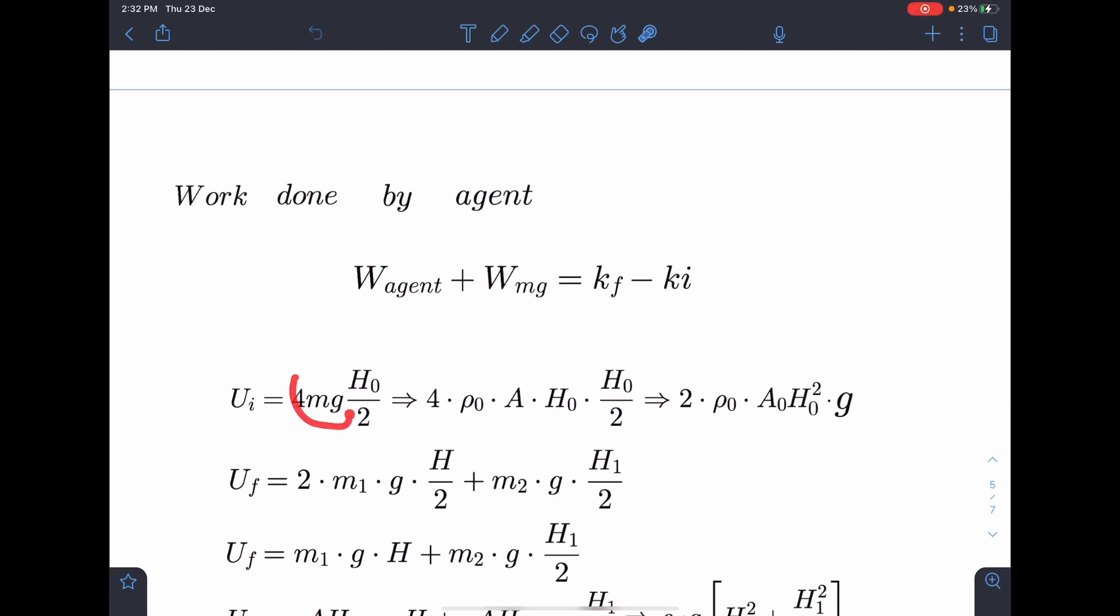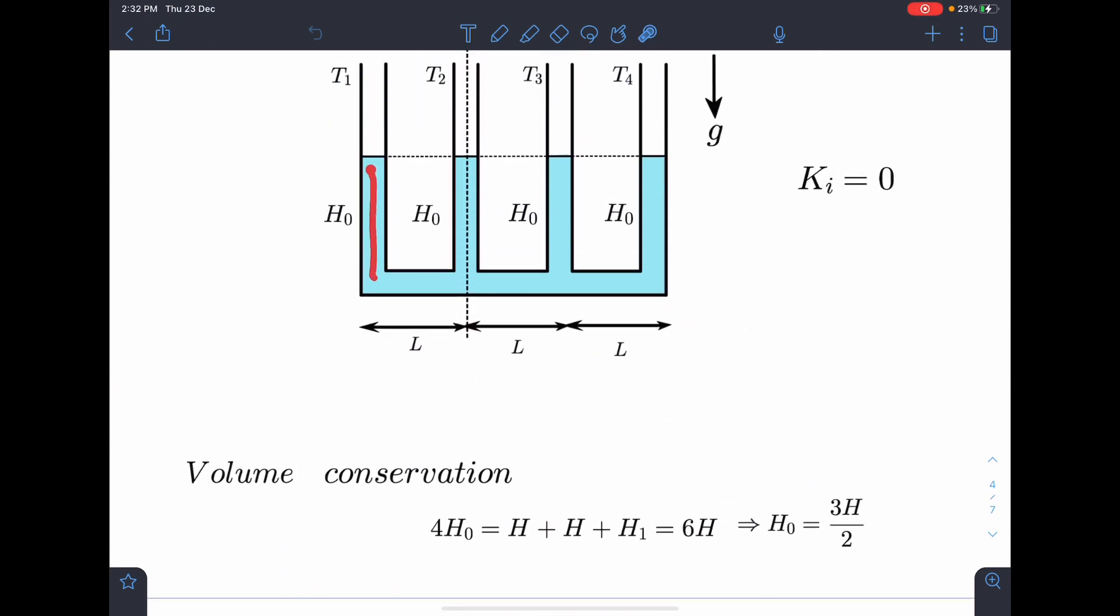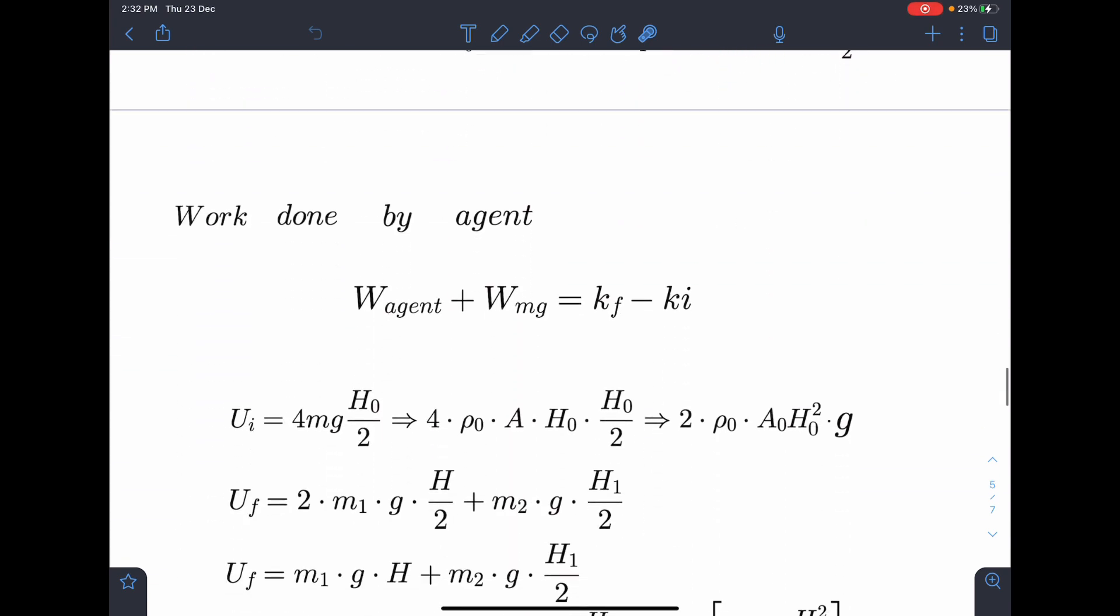So here, this W agent, we have to find out. So it is W mg and k final minus k initial. So W mg, I can write it as U initial minus U final. So initial potential energy, I can write very easily. It is like 4mg times h0 by 2, where m is the mass of liquid in one of the tubes. I am taking reference here. So m value, I can write as rho A h0 into h0 by 2. If I simplify this, I am going to get 2 rho A h0 square g.